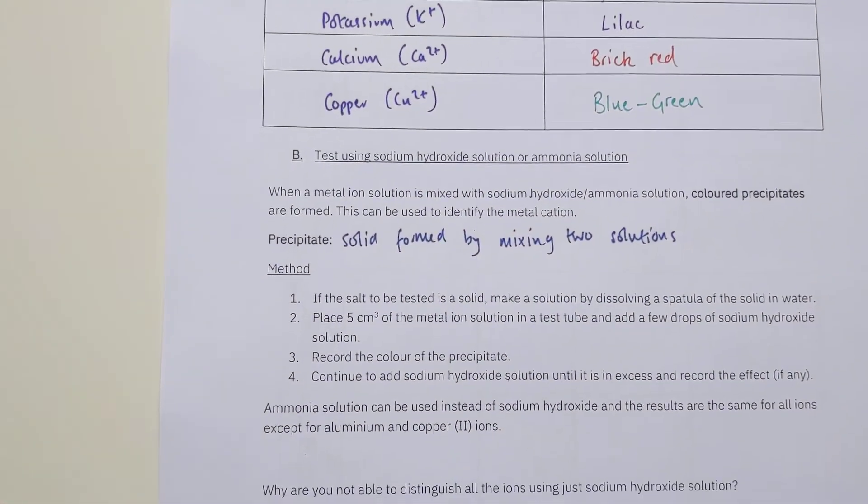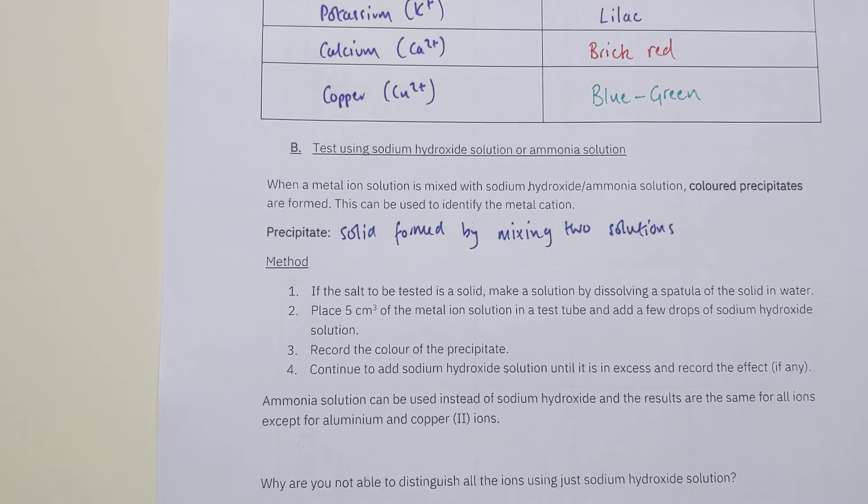Here's the method you use. If the salt to be tested is a solid, make it into a solution first by putting it in water. Five centimeters cubed of that solution in the test tube, add a few drops of sodium hydroxide solution or ammonia solution. Record the color of precipitate. In some cases you might want to see what happens if you keep adding sodium hydroxide or ammonia. You might see the precipitate dissolving again, which can be useful to tell apart some similar looking precipitates.